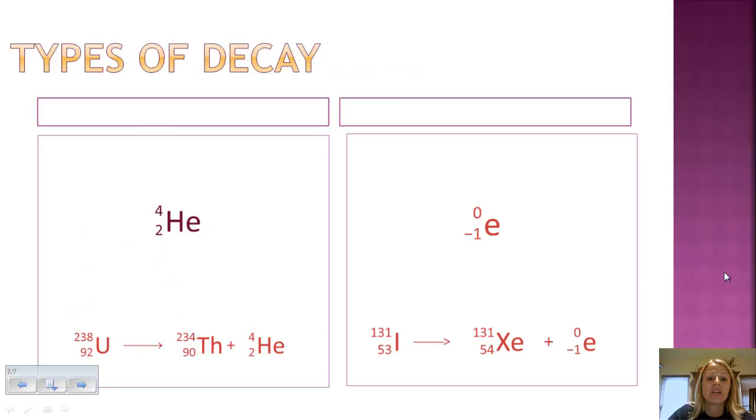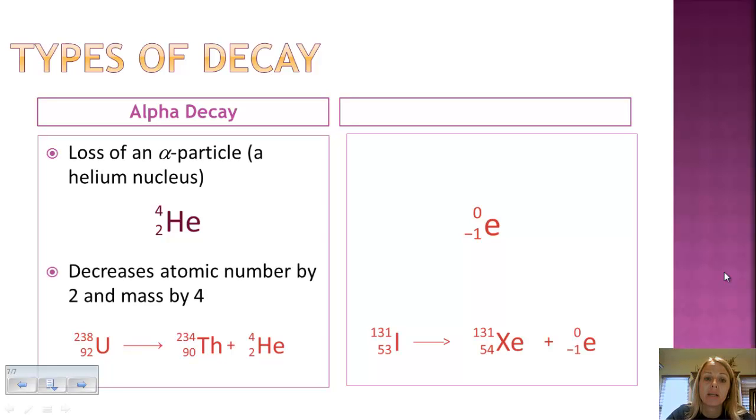Okay, so types of decay. First, alpha. And you learned in that chart that the alpha particle is emitted. And that's basically a helium nucleus. Again, you need to know this represents an alpha so that you can then later balance the equations like the one down at the bottom.